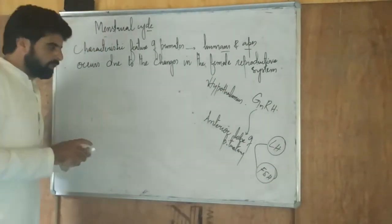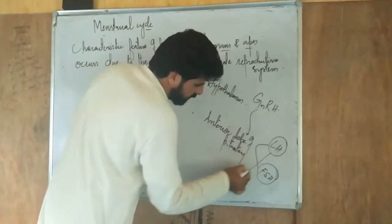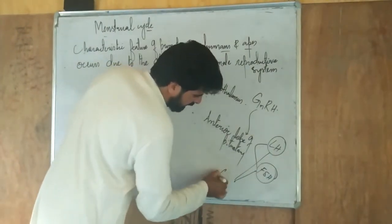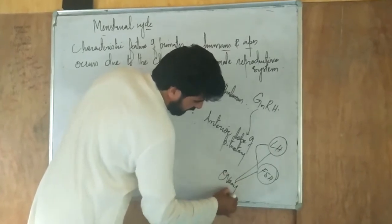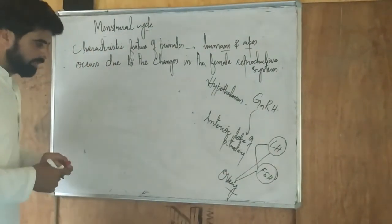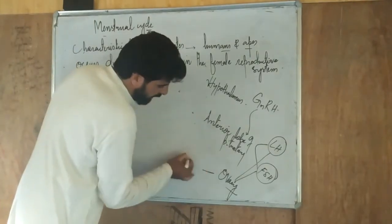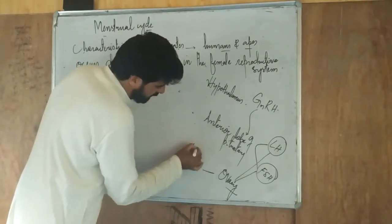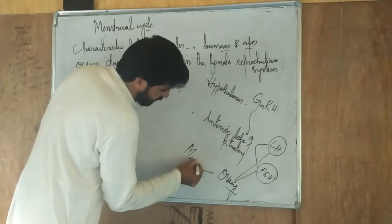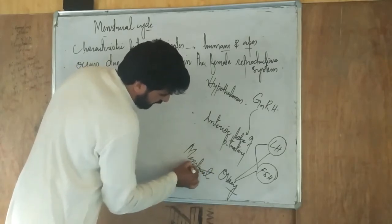These two hormones — luteinizing hormone and follicle stimulating hormone — have a target organ known as the ovary. They activate the ovary, directing it as an endocrine gland. The ovary will then initiate a cycle in the female reproductive system, which is known as the menstrual cycle.